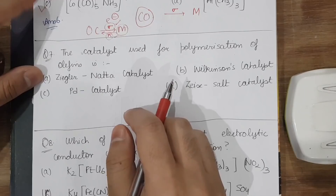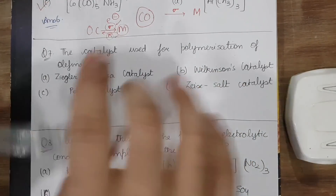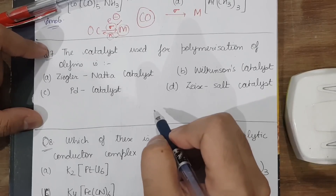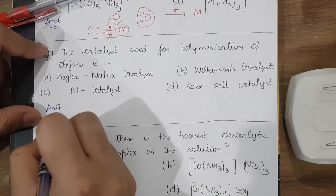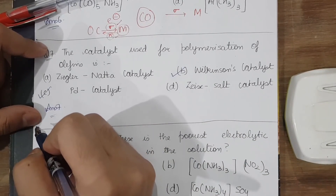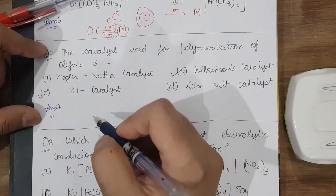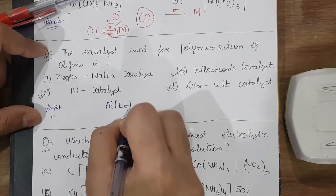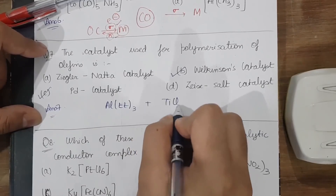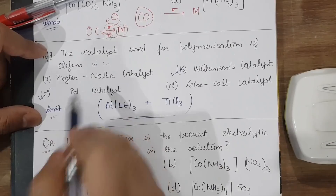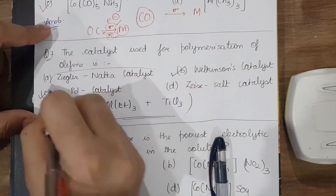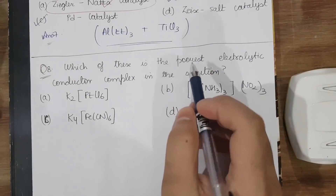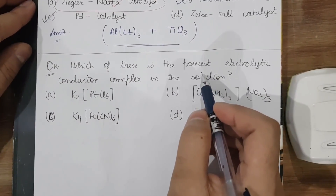The next question asks which catalyst is used for the polymerization of olefins. Wilkinson's catalyst and Pd catalyst are used for hydrogenation, so they won't be used here. The Ziegler-Natta catalyst — which is Al(Et)₃ along with TiCl₃ — is used for the polymerization of olefins. This is taught in d-block chemistry and is a very important topic.